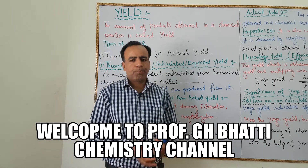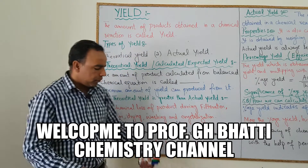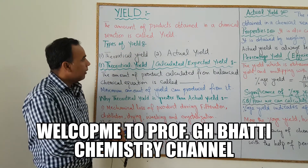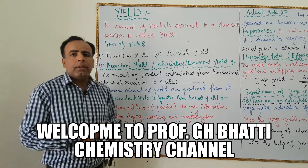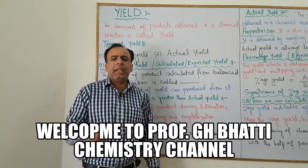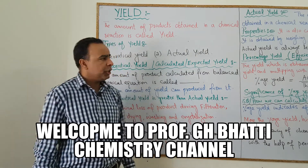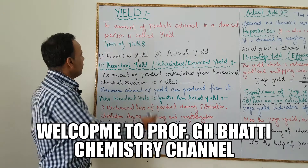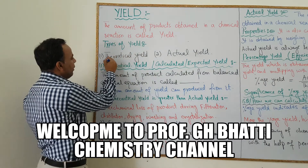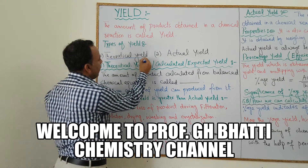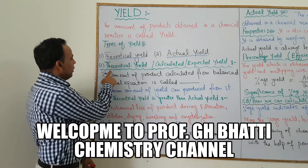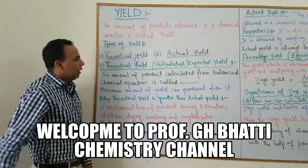First of all, what is yield? The amount of product obtained in a chemical reaction is called yield. Now there are two types of yield: theoretical yield and actual yield. First, I will explain theoretical yield.